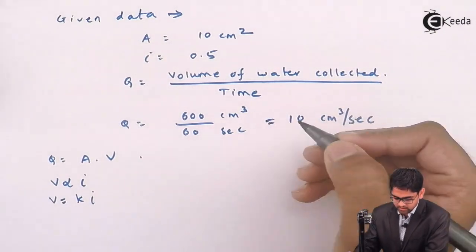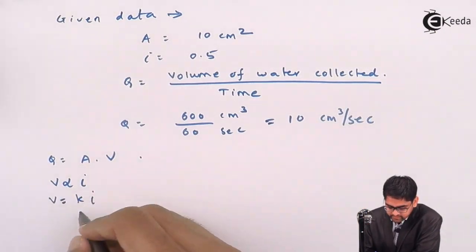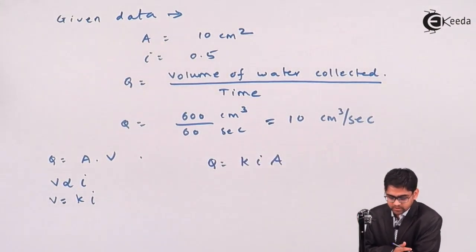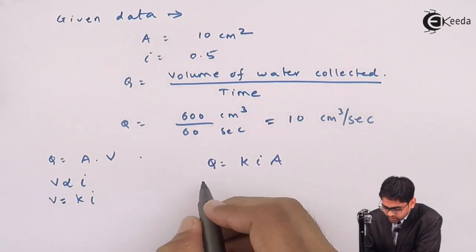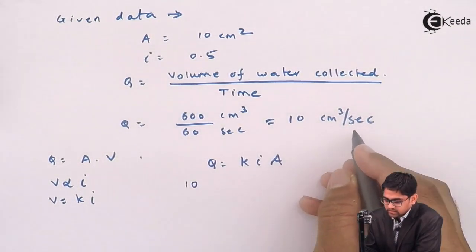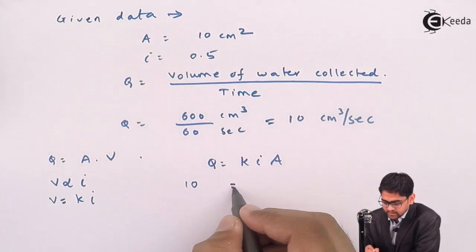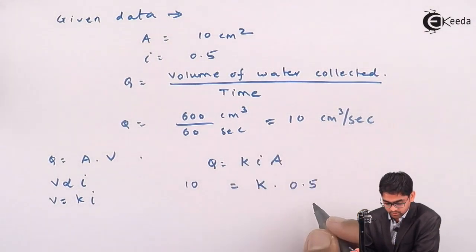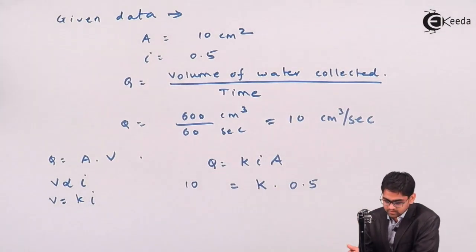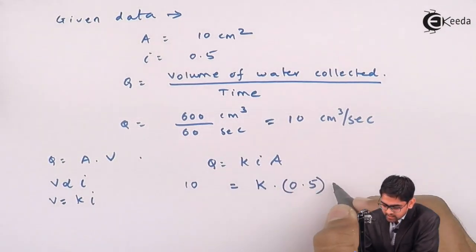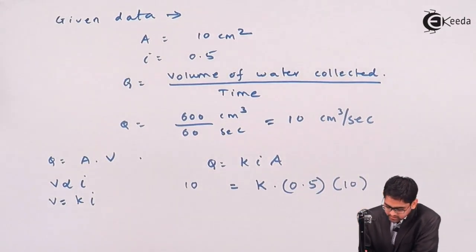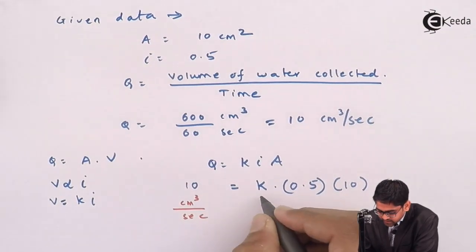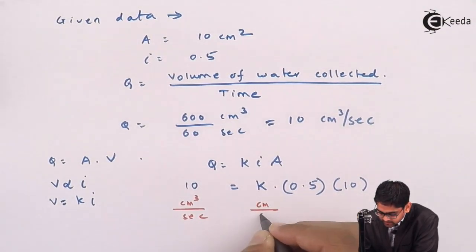And therefore, if you place V equals to K I in this equation, Q becomes KIA and that's what we have seen in the constant head permeability test. So Q becomes over here is 10 cm³ per second equals to K into I is given directly, I is unitless because meter by meter will get cancelled. So it is unitless, I and area is given as 10 cm². So this unit will be getting balanced.